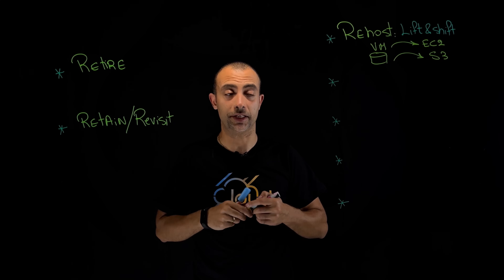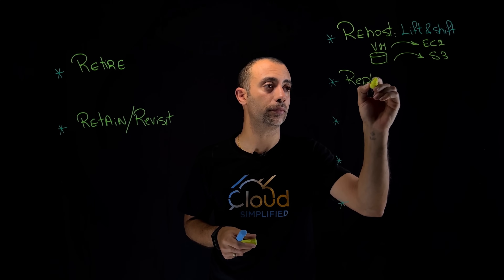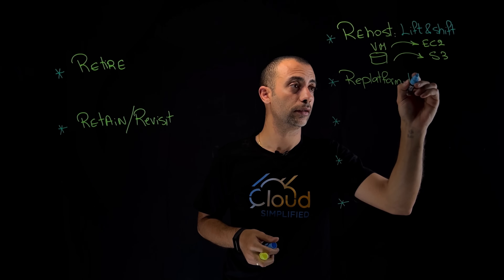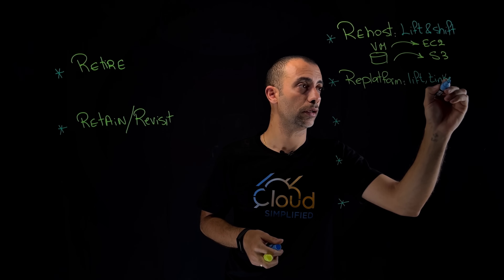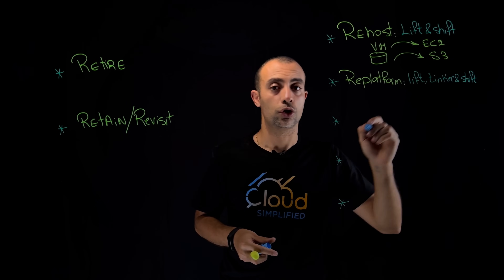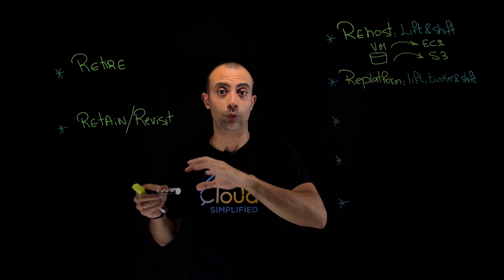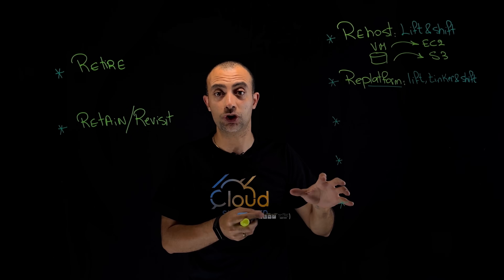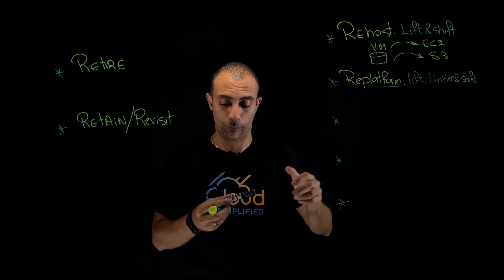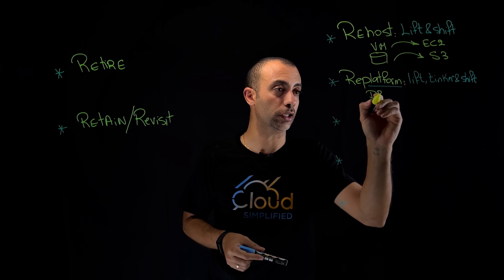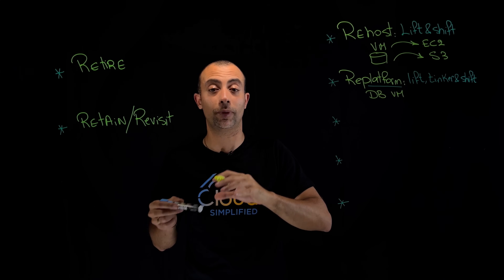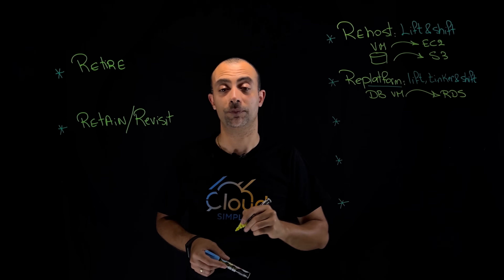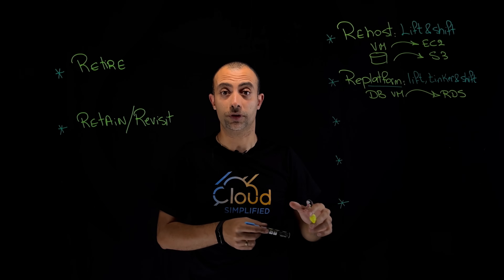The fourth type of migration is what we call Re-platform, also called Lift, Tinker, and Shift. Here, what I would like to do is offer a platform as a service — I want to introduce some optimization when migrating my application. For example, if I have my database virtual machine on-premise and I migrate it using re-platform, I can leverage RDS, which is the Relational Database Service from AWS.